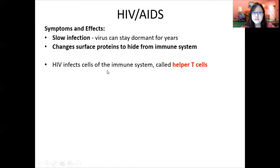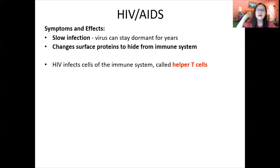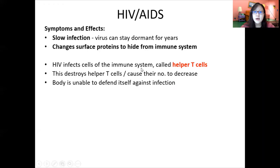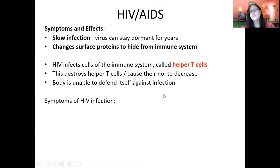When the virus is activated, it infects cells of the immune system called T-helper cells, or T-helper lymphocytes — they are lymphocytes and cells of the immune system. HIV infects and destroys these helper T cells, causing their numbers to decrease. As a result, the immune system is weakened and the body is unable to defend itself against infection over time.